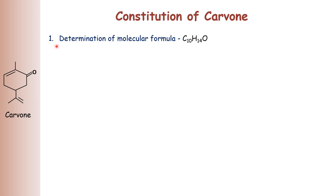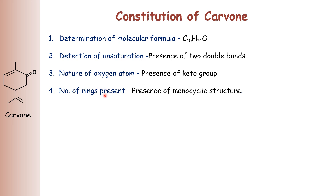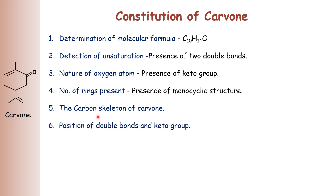Levo-carvone is used for air refreshing products. Now we see the constitution of carvone. The molecular formula is C10H14O. We have to prove the presence of a keto group in carbonyl form, then the number of rings present — carvone is a monocyclic structure — then the carbon skeleton, position of double bonds, and the keto group. Finally, spectroscopic studies and synthesis of carvone will complete the structure elucidation step by step.